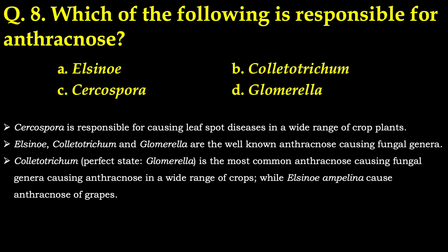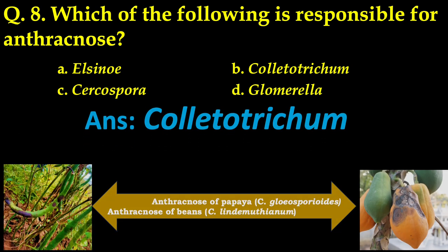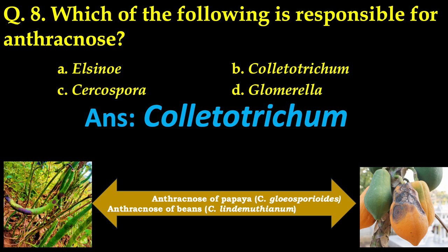Another question: which of the following is responsible for anthracnose? Sarcospora is responsible for causing liquid spot disease in a wide range of crop plants. Colletotrichum and Glomerella are well-known anthracnose-causing fungal genera. Colletotrichum, whose perfect stage is Glomerella, is the most common anthracnose-causing genus. The answer is Colletotrichum — it causes anthracnose of papaya (C. gloeosporioides) and anthracnose of bean (C. lindemuthianum).